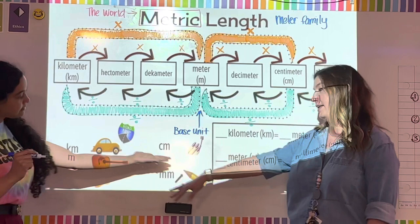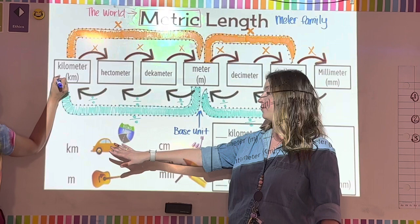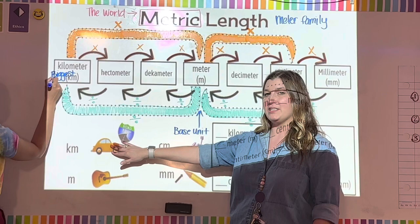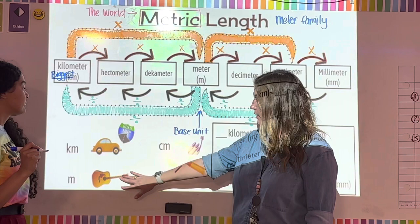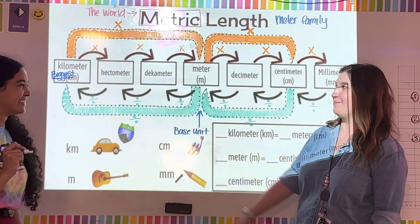Kilometers is what the world uses when traveling long distances — driving in a car, flying, anything that's a long distance is in kilometers. When we do races and say it's a 5K, that's what they're talking about — kilometers. Kilometers is the biggest unit of measurement.